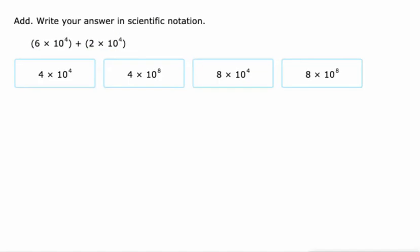And again, on this one, 10 to the fourth, 10 to the fourth. I think we're going to end up with a number in the 10 to the fourth, if not 10 to the fifth or 10 to the third. It's definitely not going to be times 10 to the eighth. 6 plus 2 is 8, so 8 times 10 to the fourth.